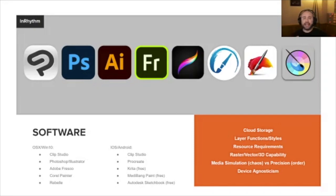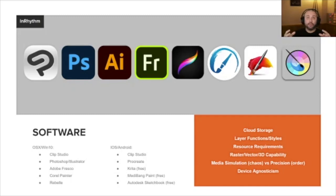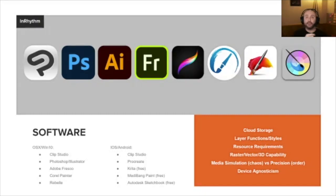Key differentiators among software: how much cloud storage they include, what layer functions and styles they support, resource requirements — do you need a powerful computer or can you run it on a tablet or phone — whether it's raster, vector, or 3D, whether those work together, and whether it does media simulation versus precise line work. Also consider: does it work on every device?